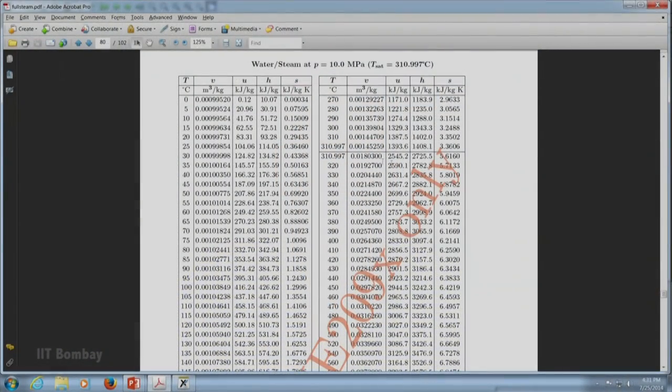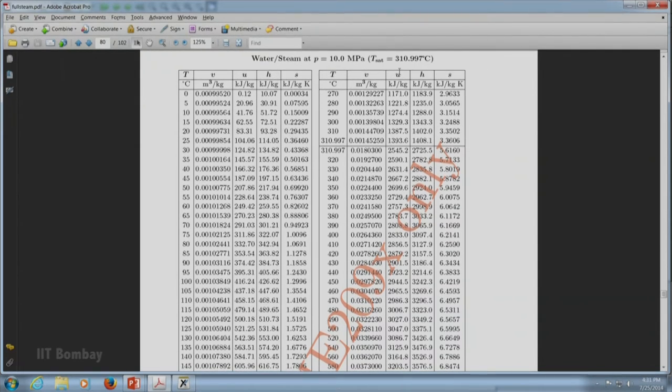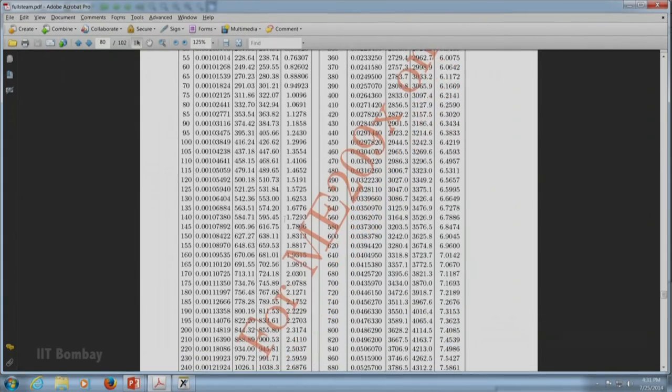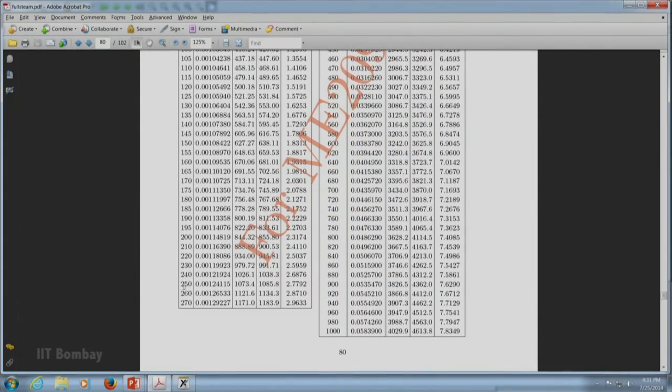Here we are at table 3, 10 MPa, and we want to see the value at 250 degree centigrade. If we come down, this is 250 degree centigrade and these are the values for V, U, H, and S respectively. We can just note this value: V equals 0.0012415 m³/kg, U is also given, H is also given, and S is also given, and we can write these values in the answer sheet that we have.